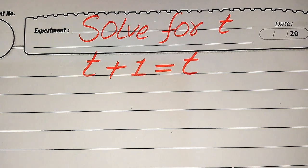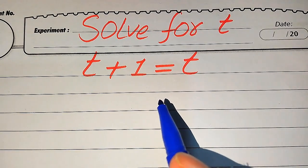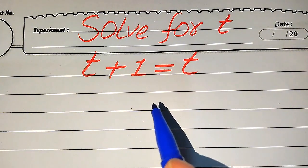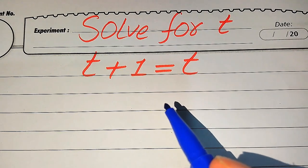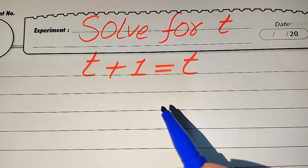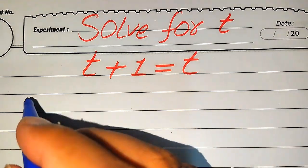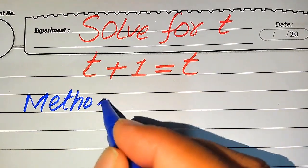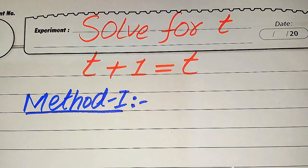Hello everyone. How to solve this problem: find all values of t if we have √(t+1) = t. We solve this problem for all the values of t. First we find all the roots of this equation, and at the end we verify which of the roots are solutions and which are extraneous roots. I will solve this problem using two methods. If you have any other method in mind, please write it in the comment section.